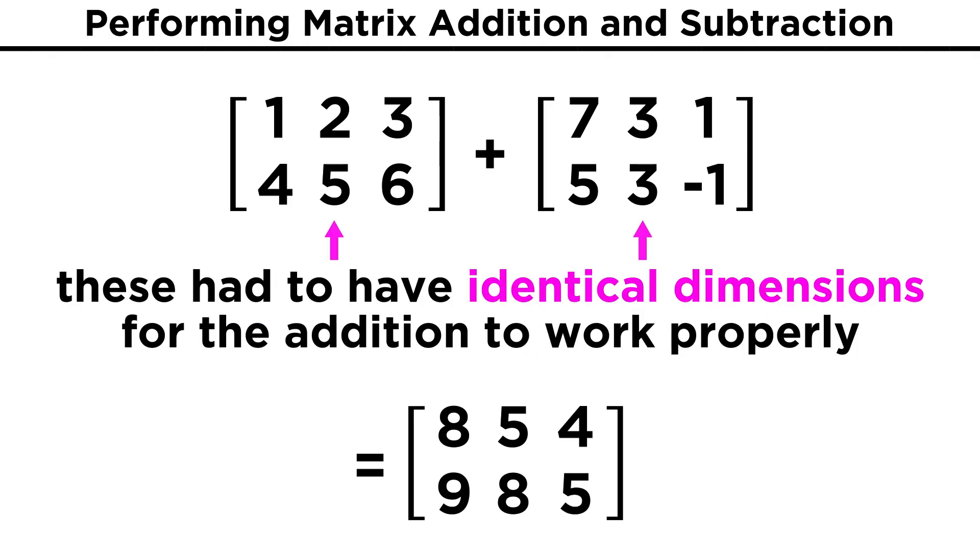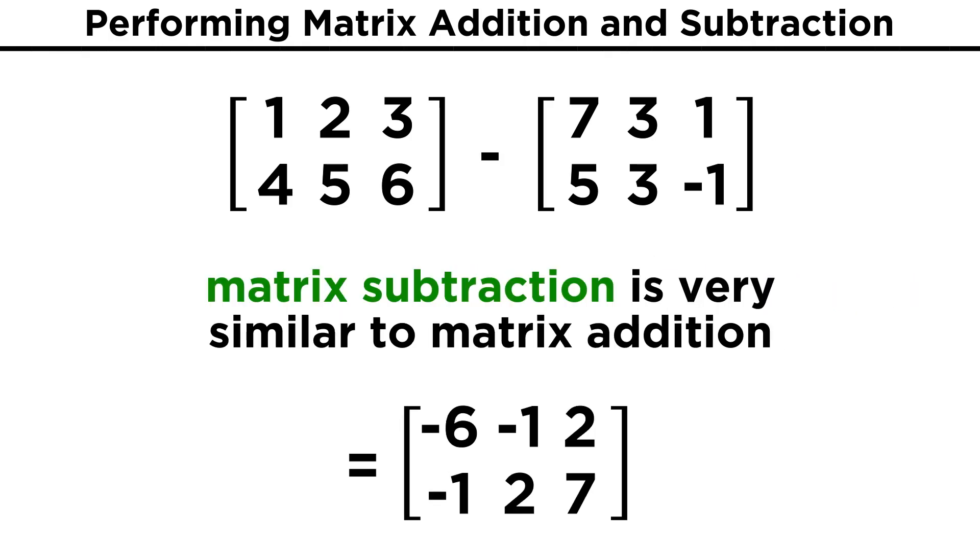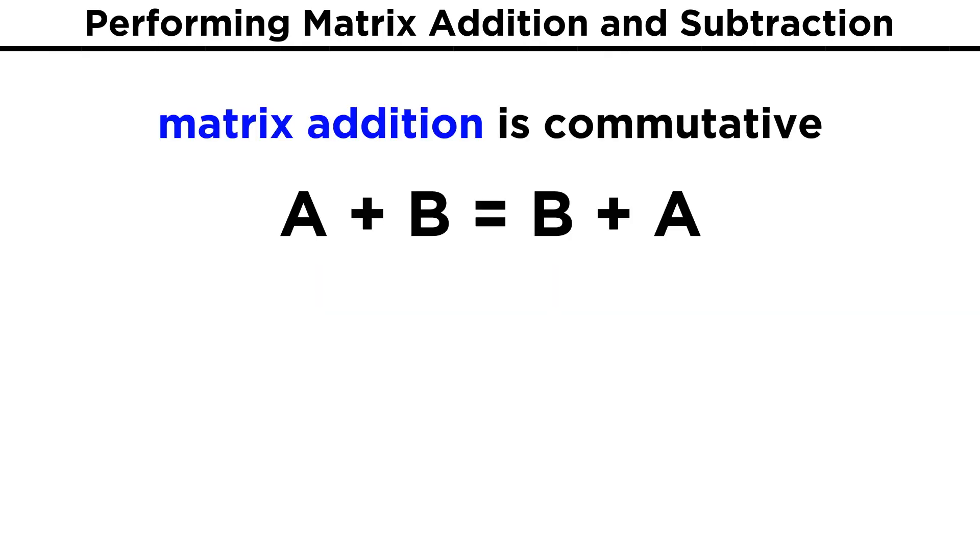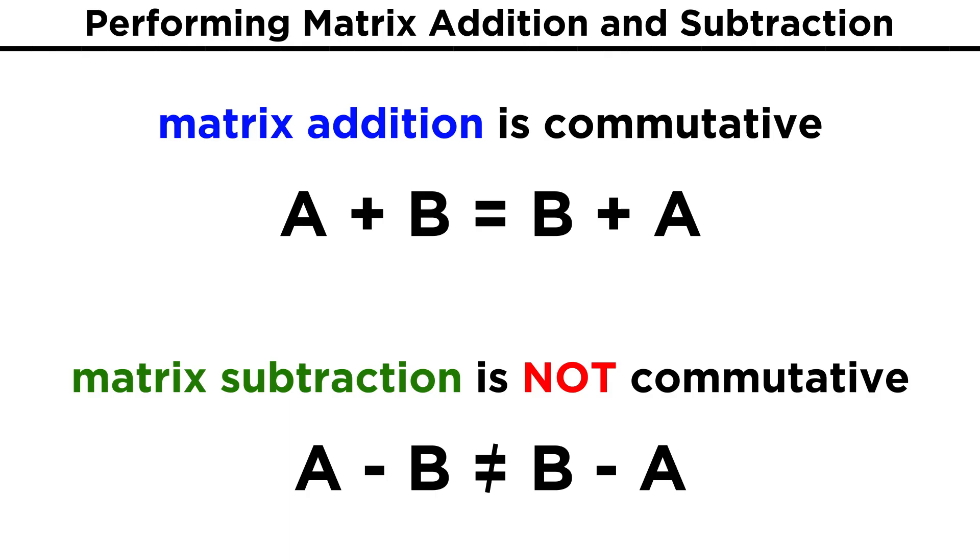Now it should be clear why we can only add matrices together that have identical dimensions, because every entry in one of the matrices in the sum must have a corresponding entry in the other matrix in the sum. Matrix subtraction works precisely the same way. We will simply perform subtraction to find each entry, rather than addition. Of course, just as when we learned these simple arithmetic operations at the beginning of this series, addition is commutative, so matrix addition is also commutative. The order in which the matrices are added doesn't matter. But subtraction is not commutative, and matrix subtraction is also not commutative. Subtracting one matrix from the other will give us a different result than if we switch the order. But this fact should be quite intuitive, and with these operations understood, let's check comprehension.